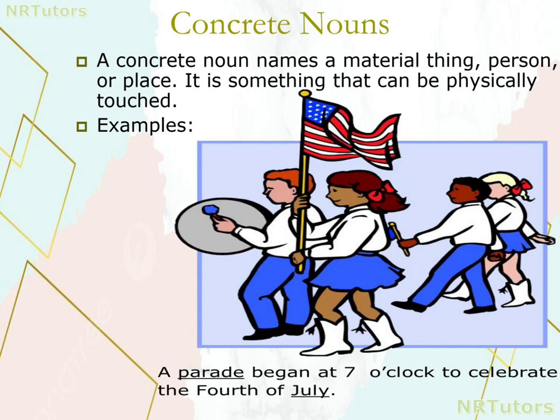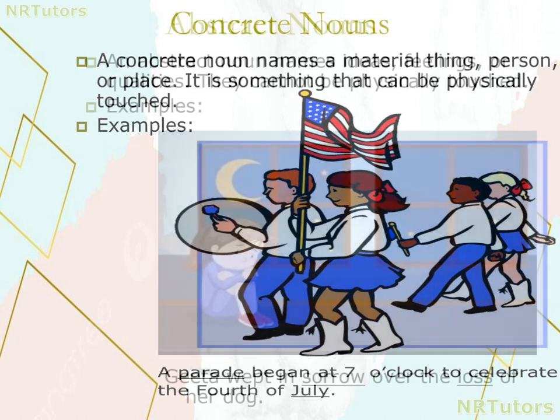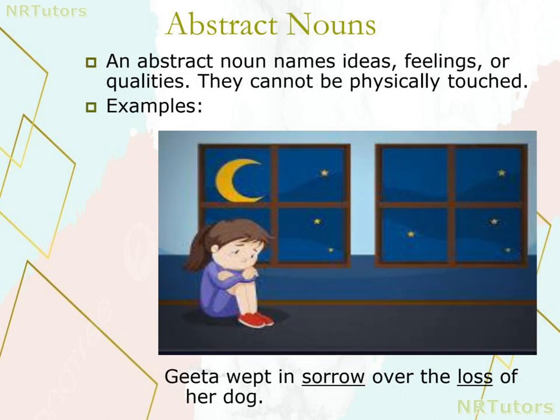The next is abstract nouns. An abstract noun names ideas, feelings, or qualities that cannot be physically touched. For example: 'Gita wept in sorrow over the loss of her dog.'